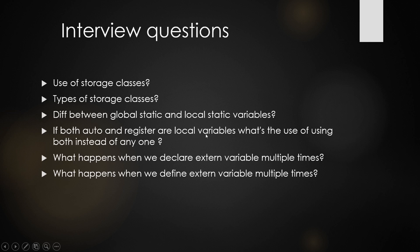Common interview questions: If auto and register are both local variables, why use both? The main difference is storage — auto variables go to RAM, register variables go to CPU registers, making access faster. What happens when you declare an extern variable multiple times? It doesn't cause any compilation error — multiple declarations are allowed. What is the difference between a global static variable and a normal global variable? A global static can only be used in the same file; a normal global variable can be accessed from other files using the extern keyword.